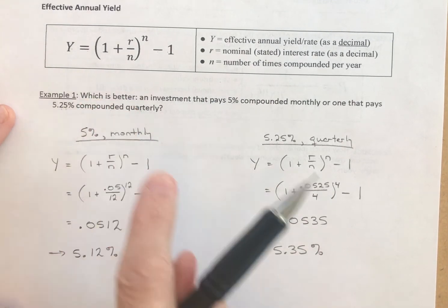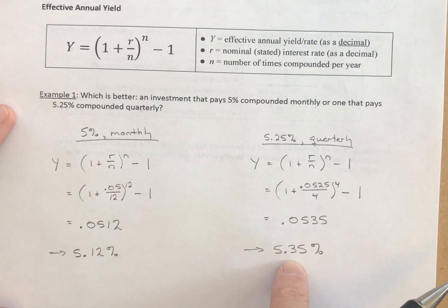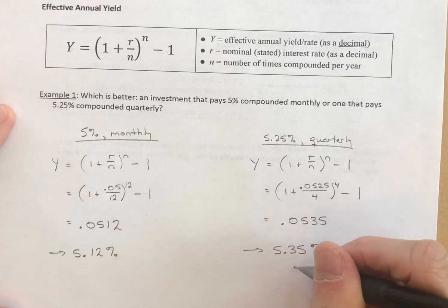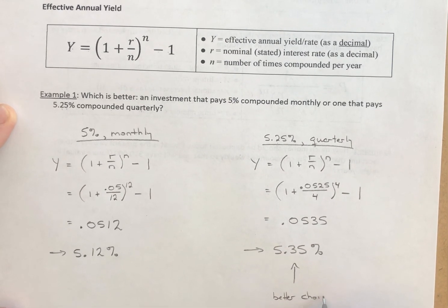And our question was, which is better? Well, obviously, paying you a rate of 5.35% is better than paying you a rate of 5.12%. So this is the better choice. So there you have it.